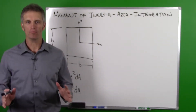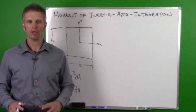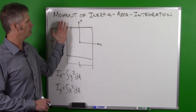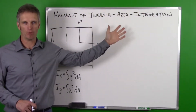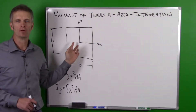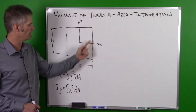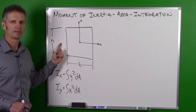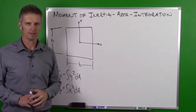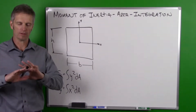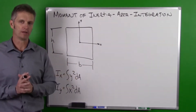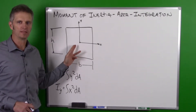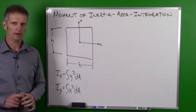I'd like to go through the moment of inertia calculation using the integral method. When we have a moment of inertia we are using the area moment of inertia, and in this case we're going to use a rectangular cross-section. We have a rectangle with a base and a height, and the coordinate axes we can arbitrarily assign — in this case I'm going to assign it directly through the centroid or center of our object.